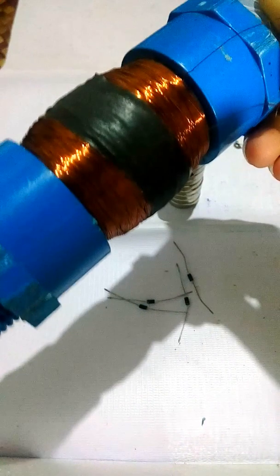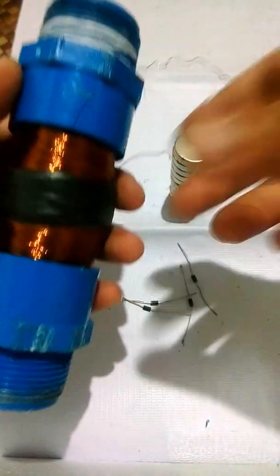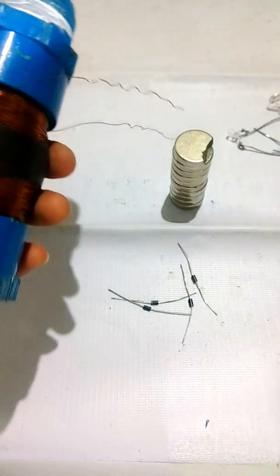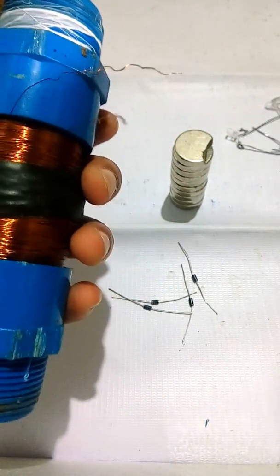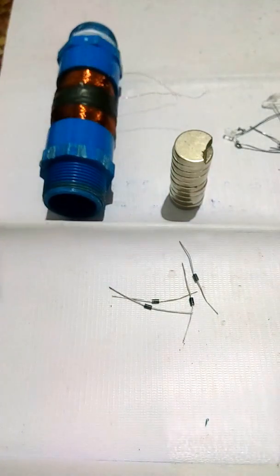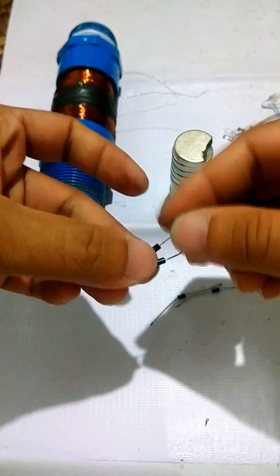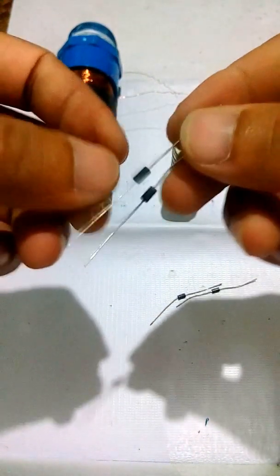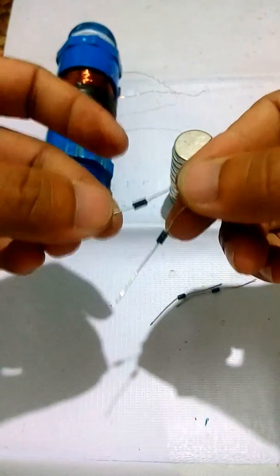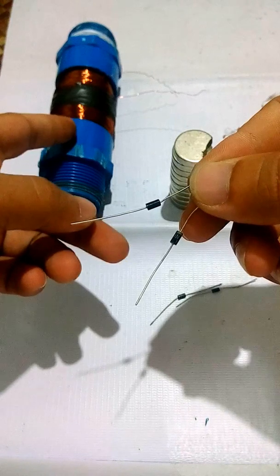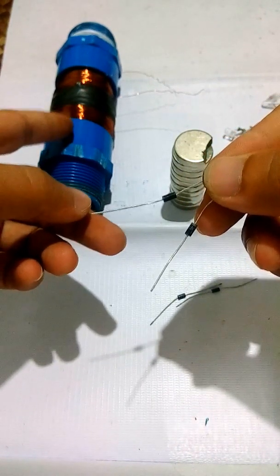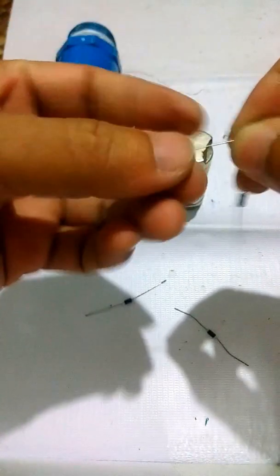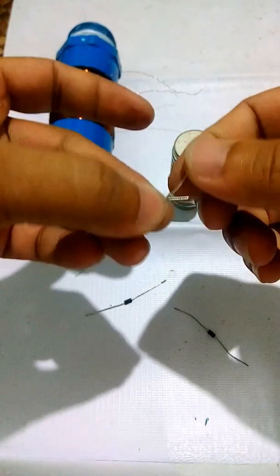The next thing we do is connect the rectifier diodes. These rectifier diodes will convert the AC to DC, since the output of this is AC. This should be connected this way.